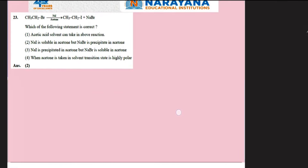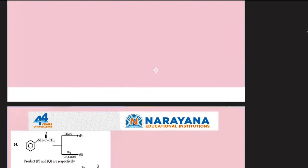Bromoethane reacted with sodium iodide in acetone gives iodoethane and sodium bromide — this is the Finkelstein reaction. The driving force for this reaction is that sodium bromide is insoluble in acetone while sodium iodide is soluble in acetone. The answer is the second option.